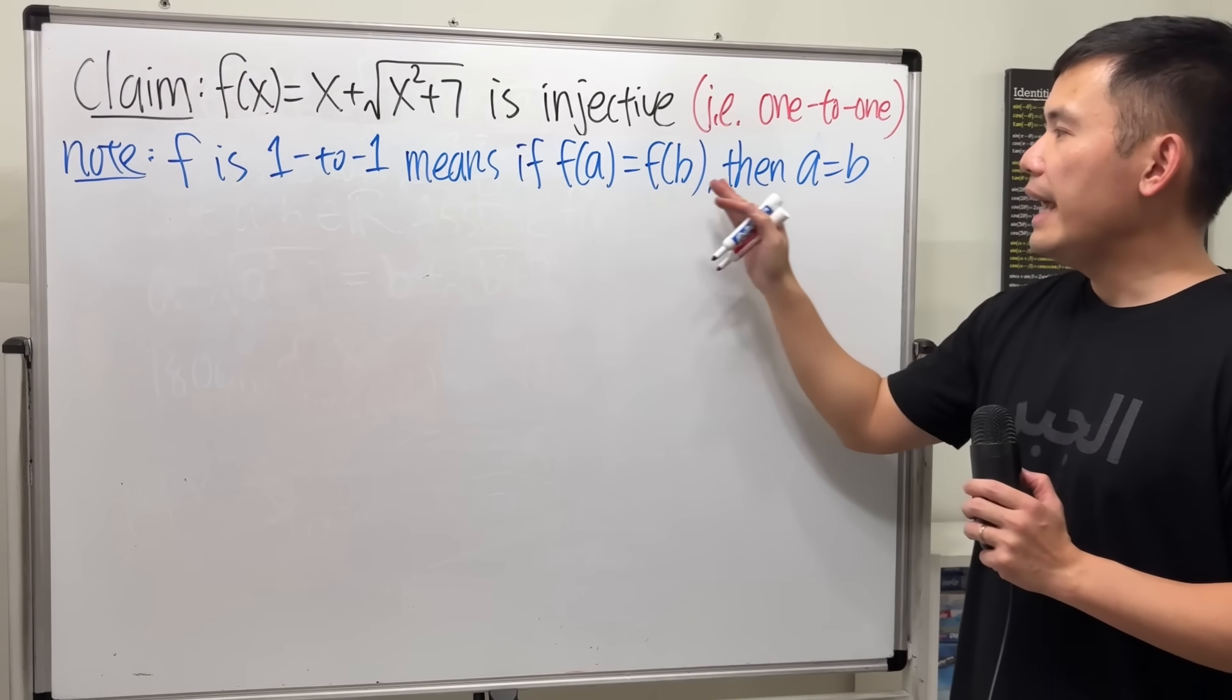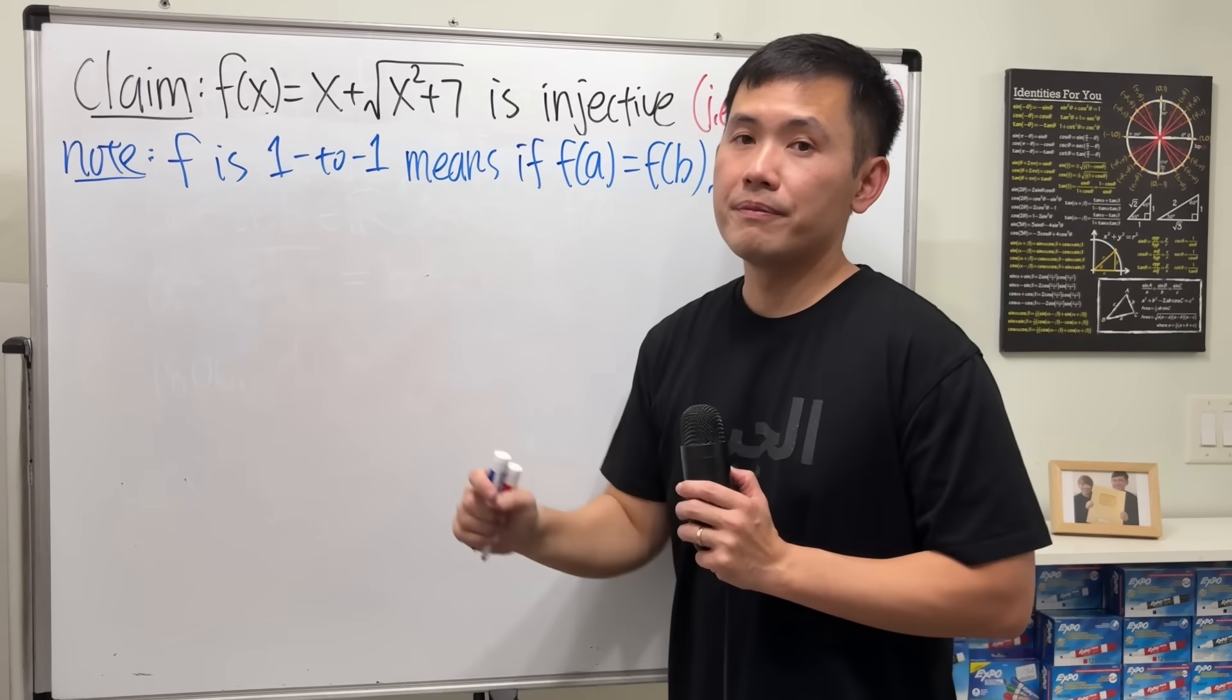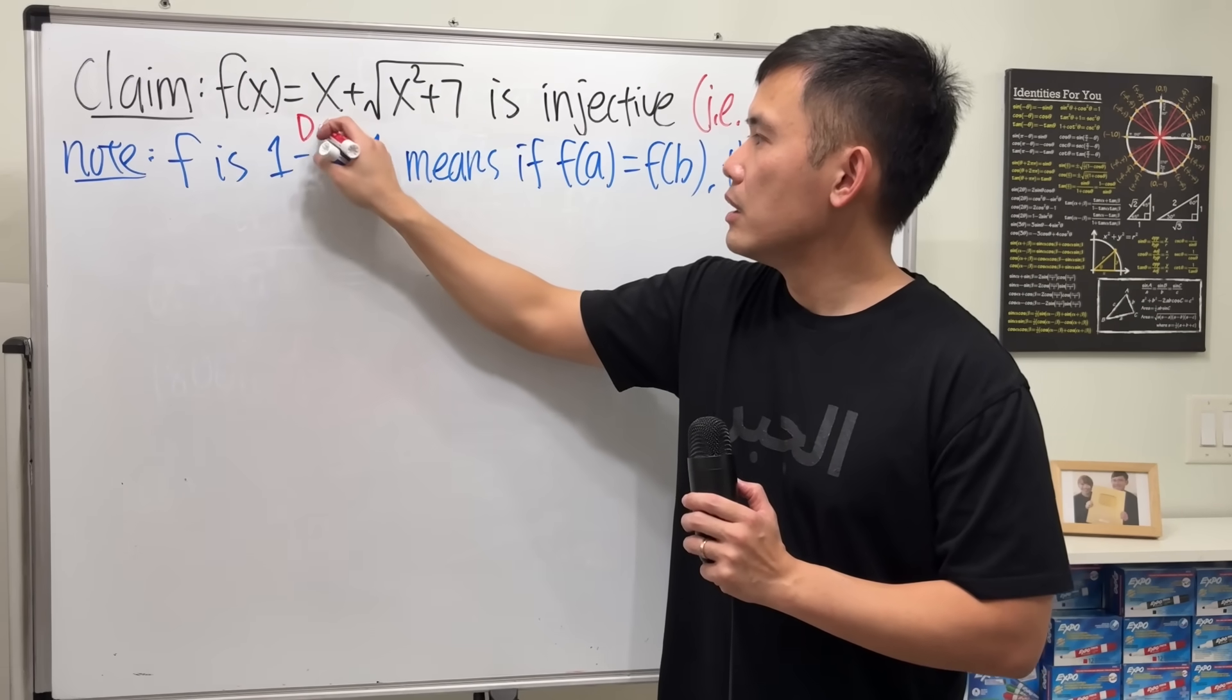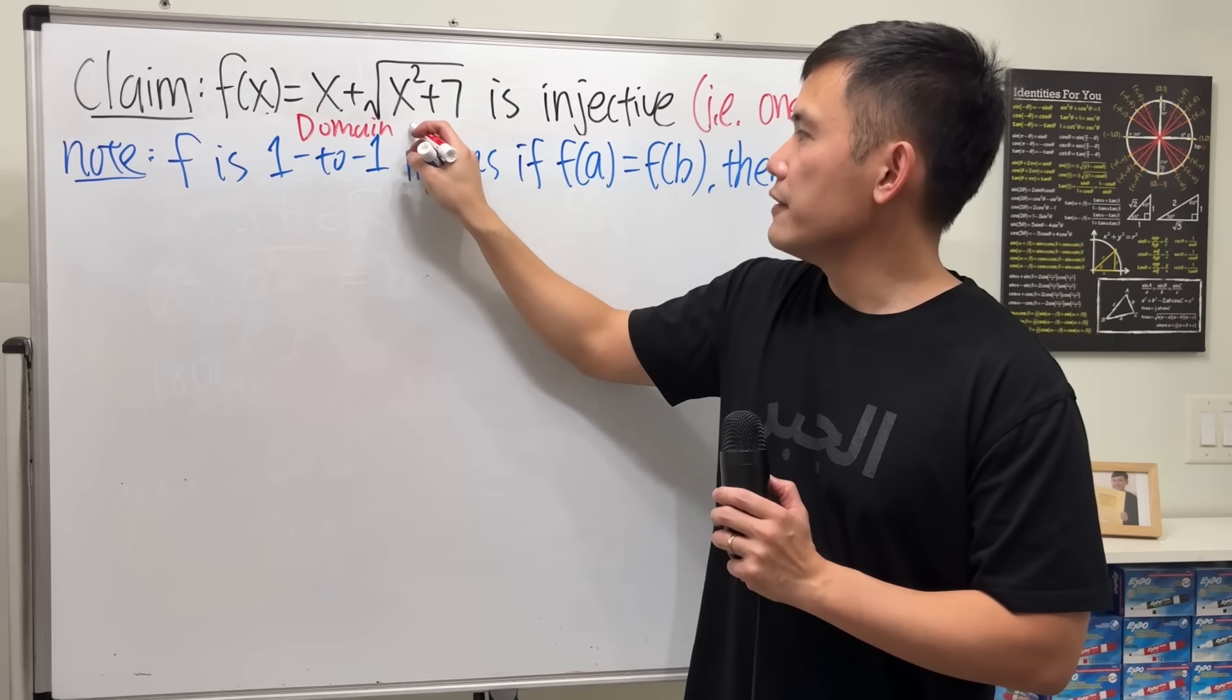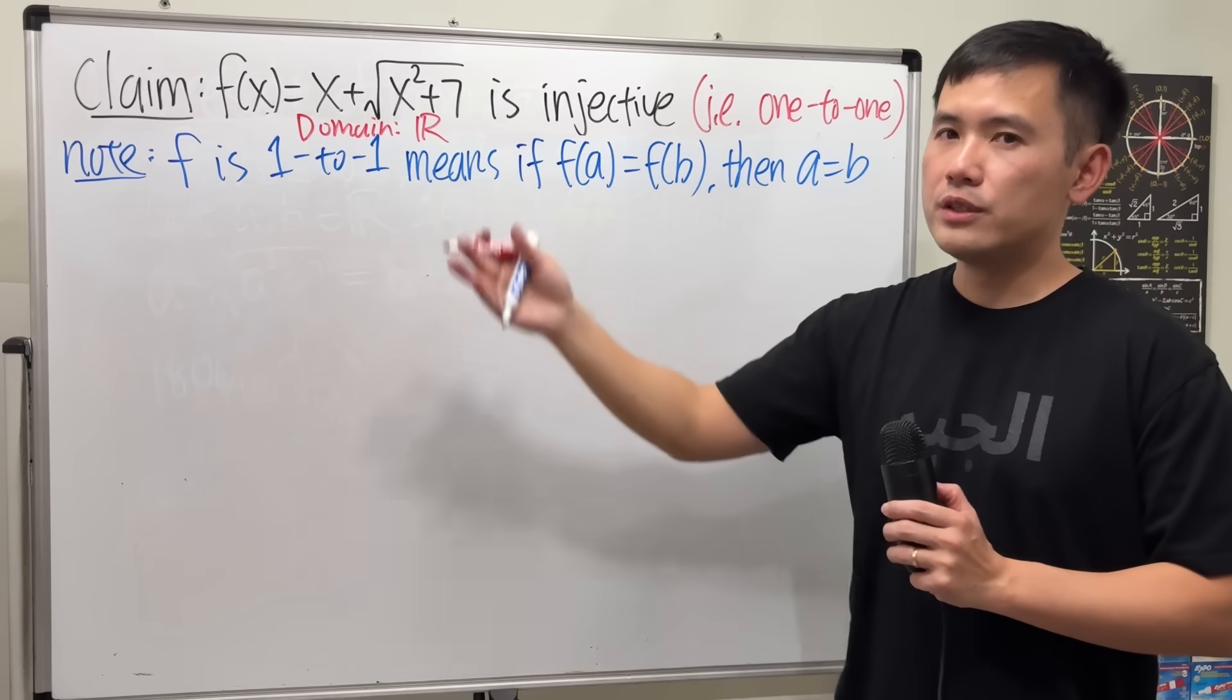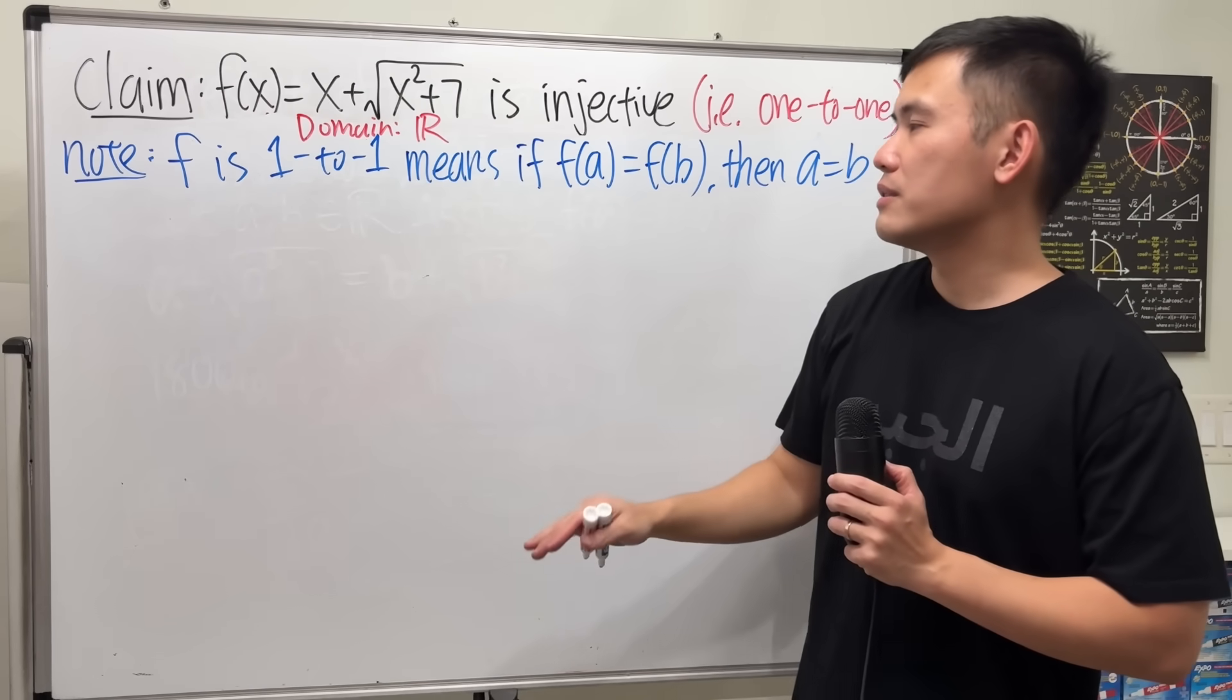And then right here, a and b have to be in domain of the function. Right here, let's take a look. The domain of this function is in fact all real numbers, thanks to the square right here, even though we have square root. But you can actually have negative x, negative value for x.